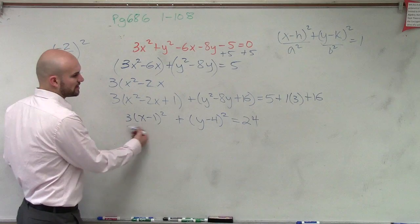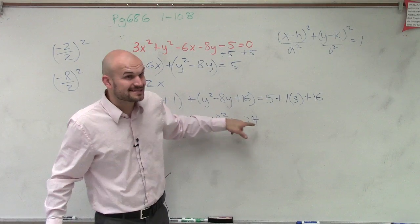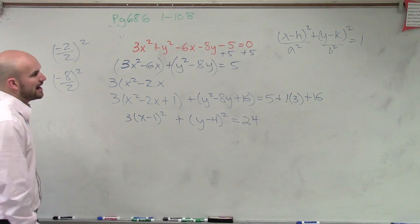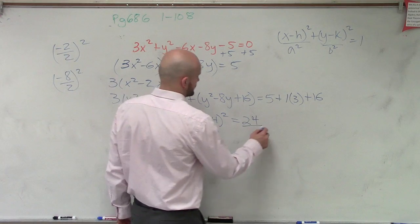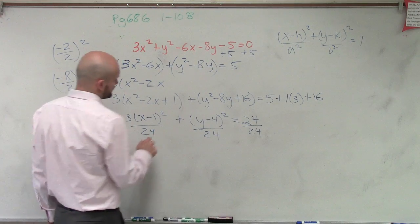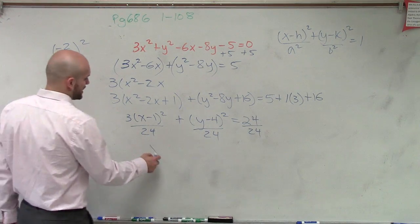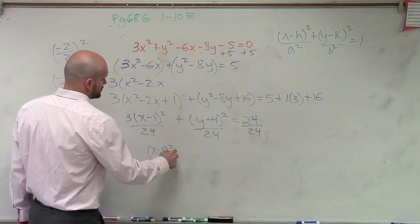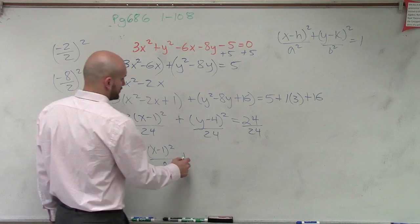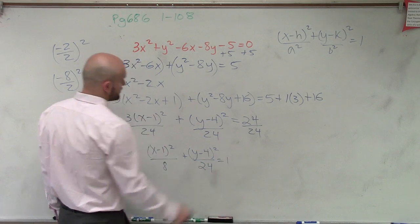We don't have any numbers as coefficients under our terms yet, so to figure out our a and our b, I need to get rid of the 3, and I need this to equal 1. To do that, I divide everything by 24. So I get (x minus 1) squared over 8 — because 24 over 3 reduces to 8 — plus (y minus 4) squared over 24, equals 1.